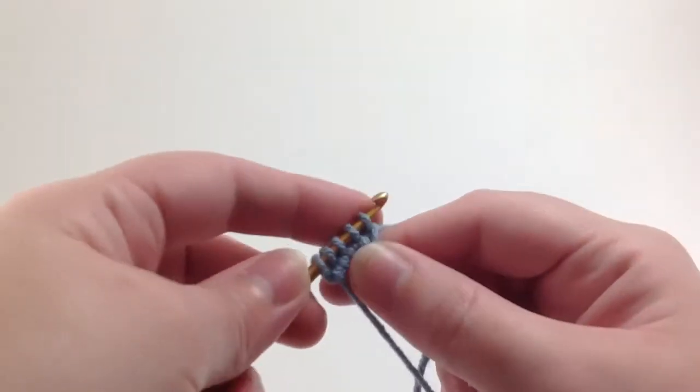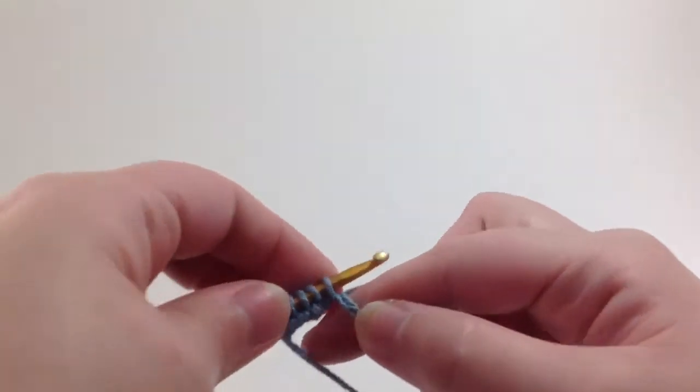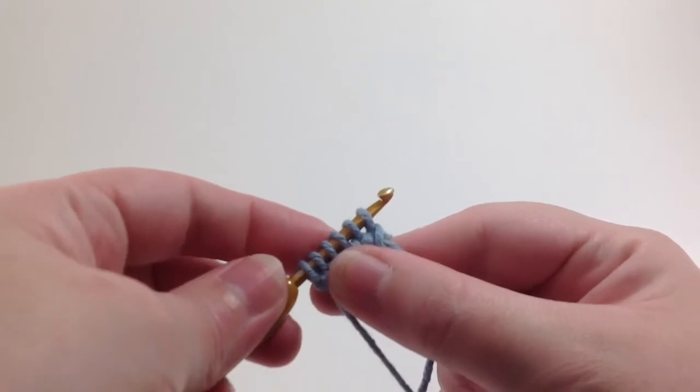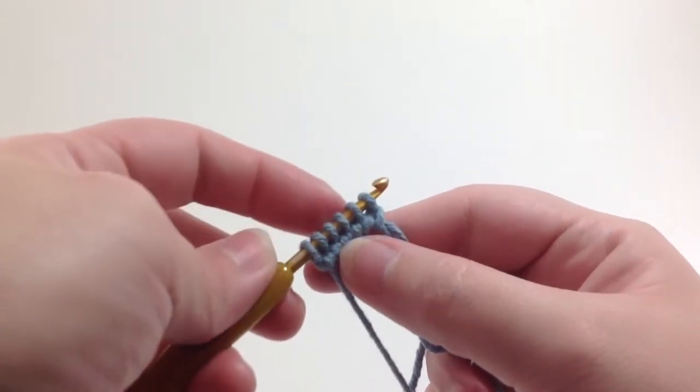And I find it's easier to just work all the stitches that I want on the crochet hook and then transfer them all at once. So there's my six stitches.